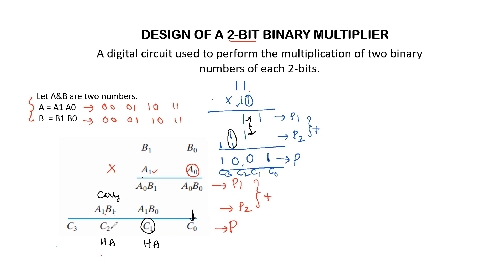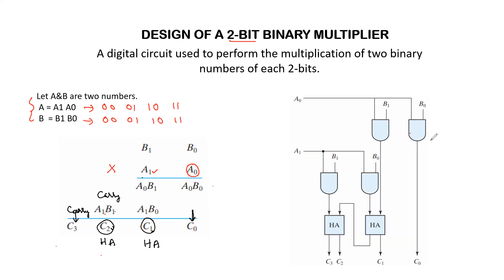The output of this second half adder gives sum C2 and a final carry C3. Based on this logic we develop the circuit diagram using logic gates. C0 is the output of an AND gate with inputs A0 and B0. For A0 B1, a second AND gate is used, and for A1 B0, another AND gate is used.